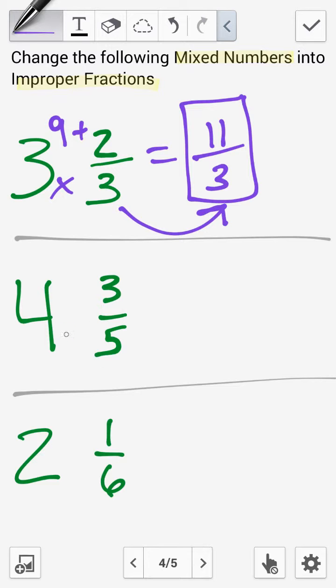For 4 and 3 fifths, we multiply the denominator by the whole number. We get 20. Add the numerator. And we end up with 23 on the top. And the denominator, again, stays the same. So 23 fifths is my answer.